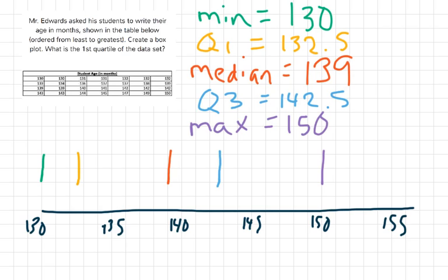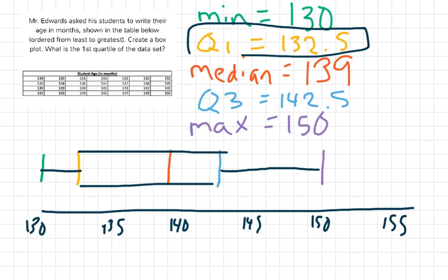Okay. And now what we're going to do is we're going to connect quartile 1 to quartile 3. We're going to make a box. And then the whiskers go out to the maximum and the minimum here. So that's my box plot. And the first quartile of the data set is what we already found here. It's right there. It's 132.5.